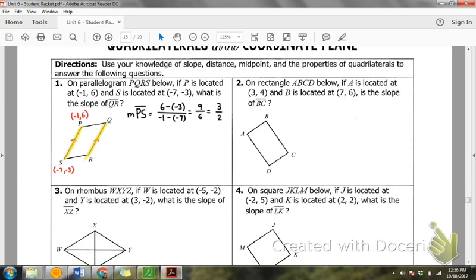So the slope of PS is 3 over 2, which means what is the slope of QR? Okay. So we're going to say that here. The slope of QR is 3 over 2. Okay.